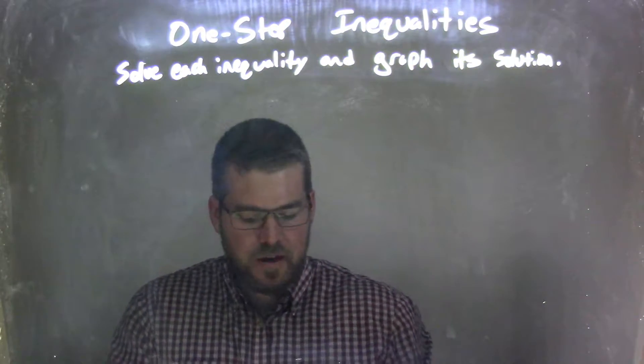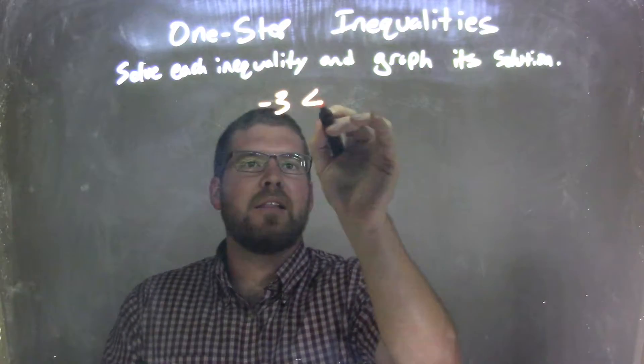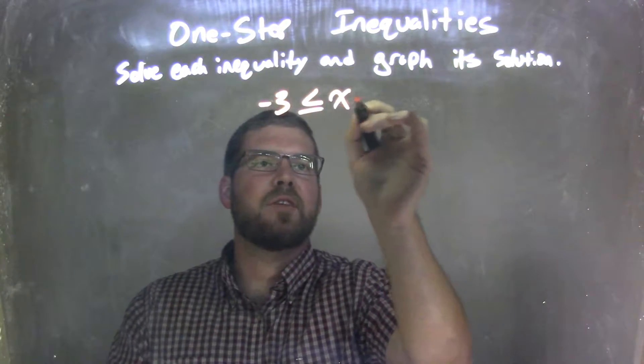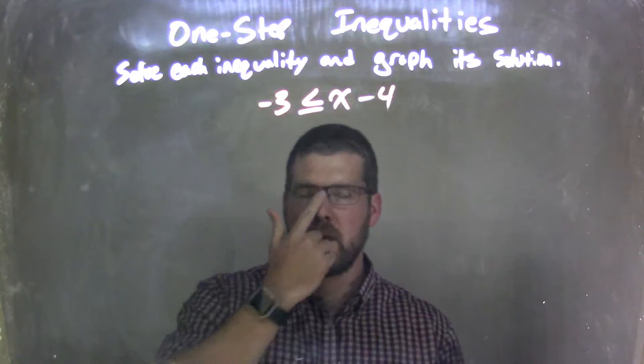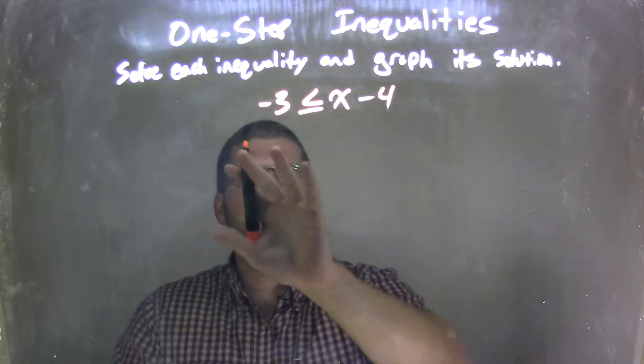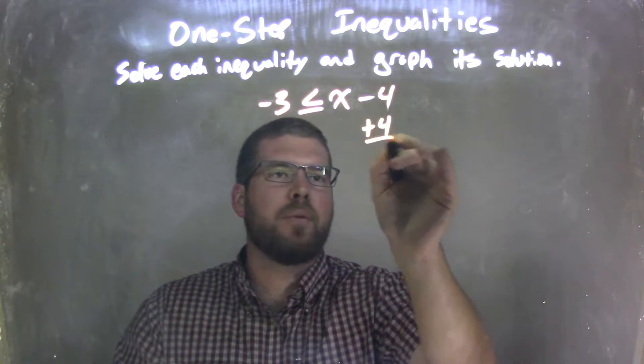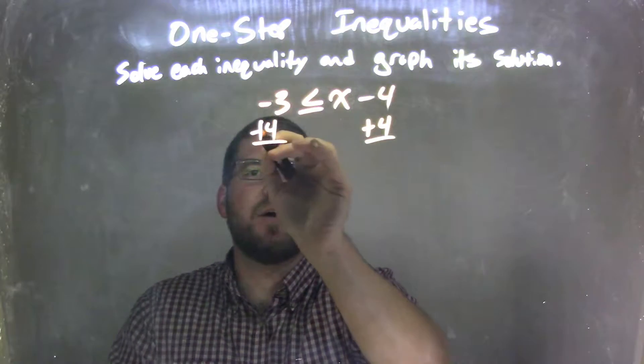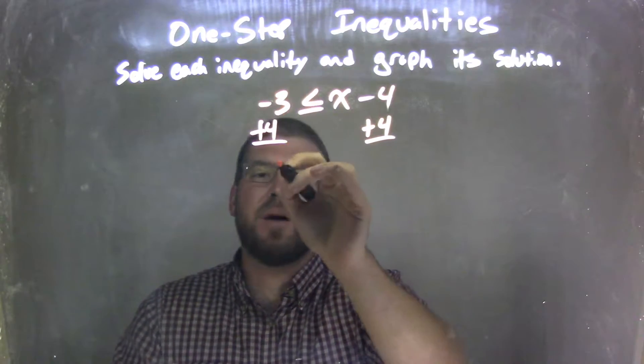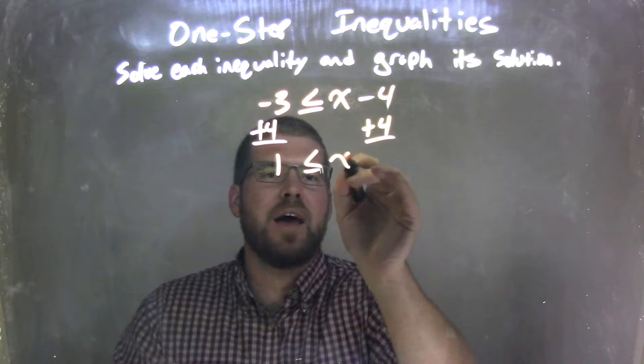If I was given this inequality, -3 ≤ x - 4, my first step is to bring the 4 over to get x by itself, so I'm going to add 4 to both sides. What that does is -3 + 4 = 1, and that's less than or equal to x.